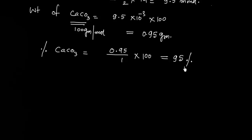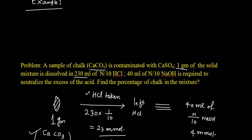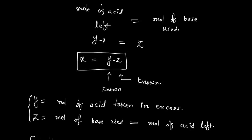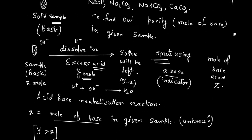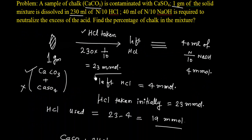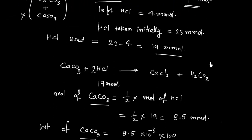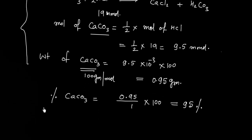Once again, the idea in back titration is very simple. You calculate the millimoles of HCl left, then subtract from the millimoles of HCl initially given. Here, initial HCl was 23 millimoles and left HCl was 4 millimoles, so HCl used is 19 millimoles. Then write the stoichiometric equation and solve.